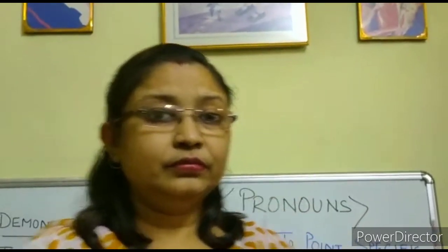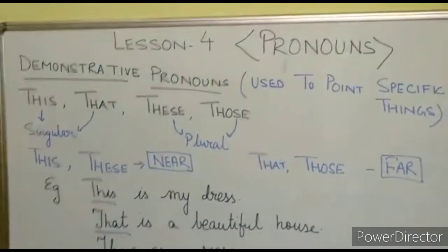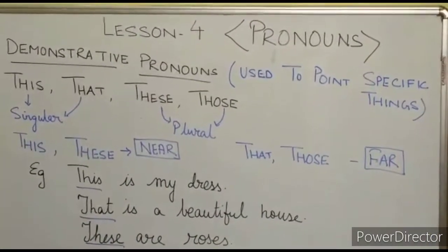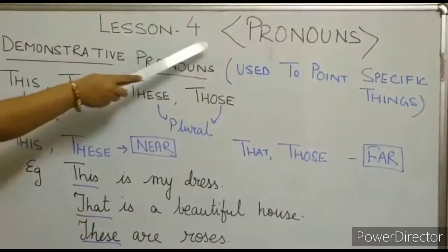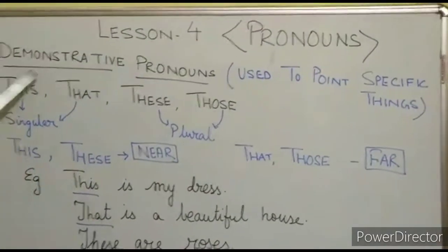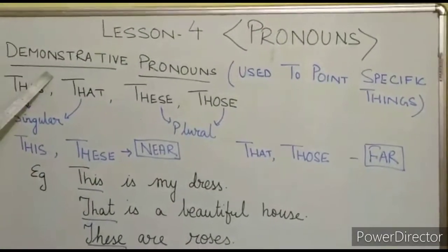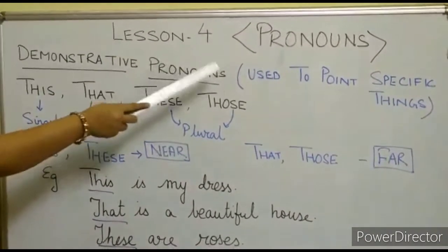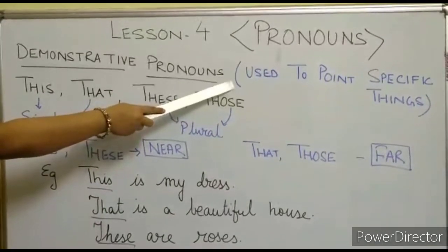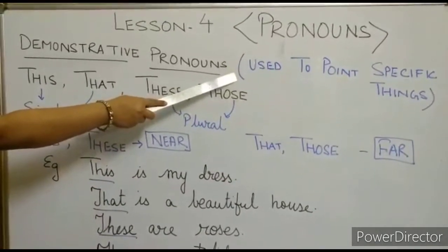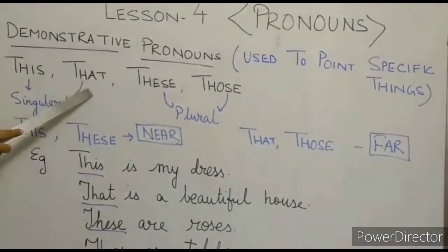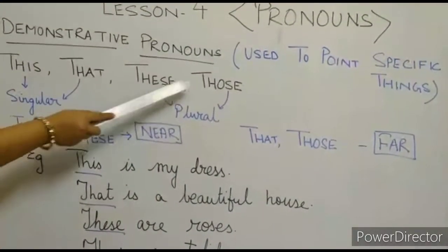So students, 'this' and 'these' refer to things which are close to us, and 'that' and 'those' refer to things which are a bit far away from us, at a distance. Now have a look at the board. The definition: demonstrative pronouns are used to point to specific things. The examples are: this, that, these, and those.